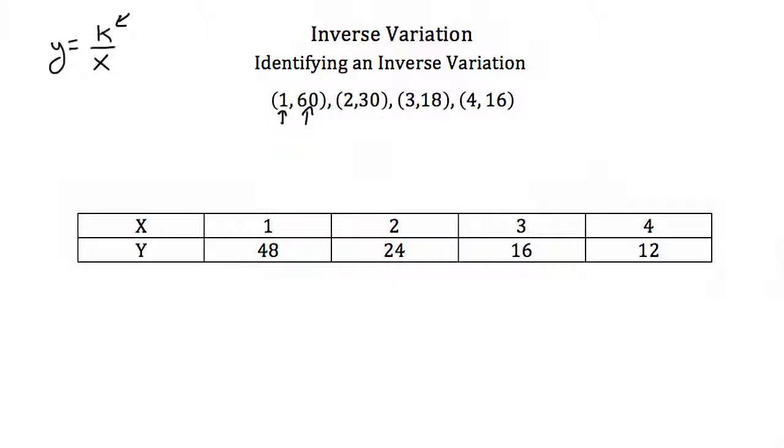Substituting, we have 60 equals k over 1, which means k equals 60. If this is an inverse variation, then no matter which point we plug in, k should always equal 60.